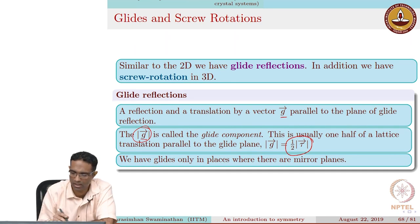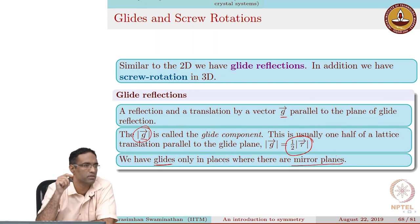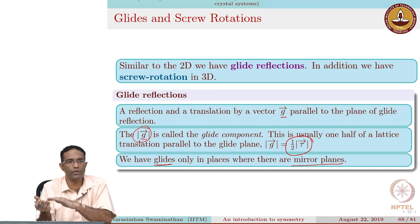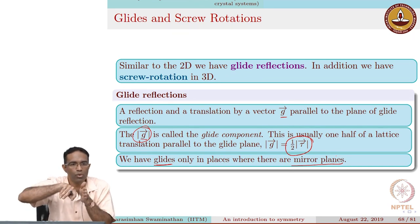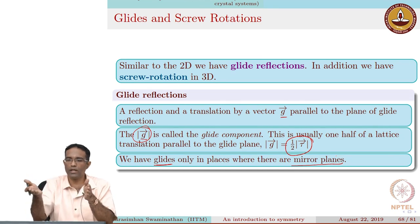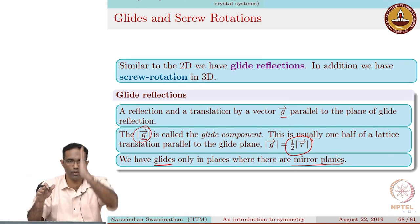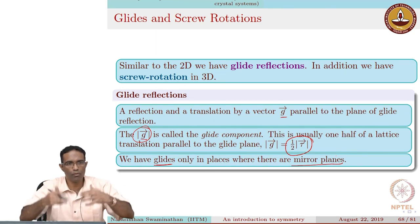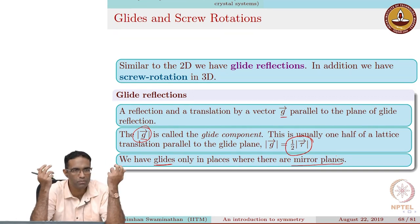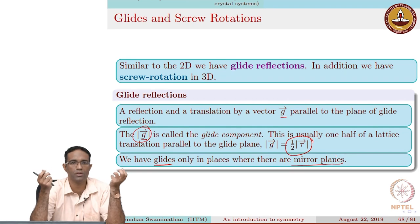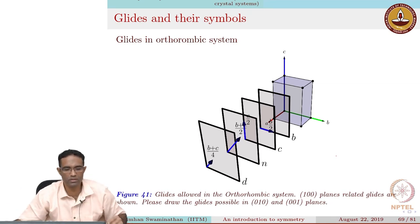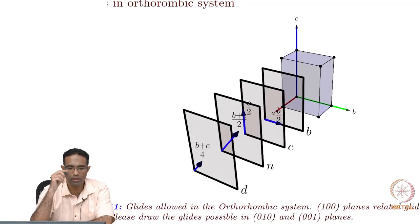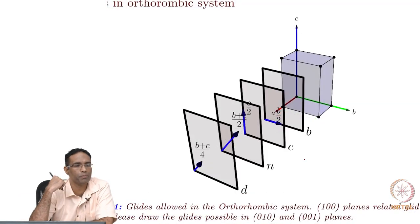We will see some examples to understand this better. The most important thing is that you can have glide planes only in regions where you can have mirrors, because you are always going to reflect. The only thing that differentiates between a pure mirror and a glide is that in a mirror you just reflect, whereas in a glide you reflect and then move. A good example to look at would be the glide planes possible in an orthorhombic system.